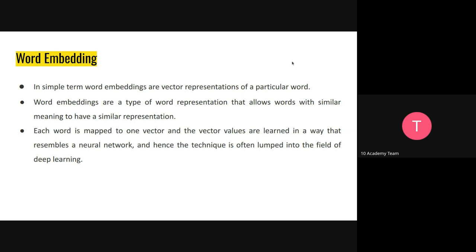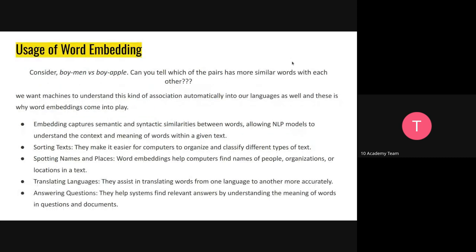We are converting everything into a mathematical vector representation form. Consider this example: if I ask you, between 'man' and 'boy' versus 'boy' and 'apple', which is more similar — we all answer 'boy' and 'man' are more similar than 'boy' and 'apple'. That's how we want our machines to understand language too — so they can enhance our human responses. The embedding part in NLP helps us get there. It helps the ML model handle these kinds of similarities between words. The embedding captures semantic and syntactic similarities between words.